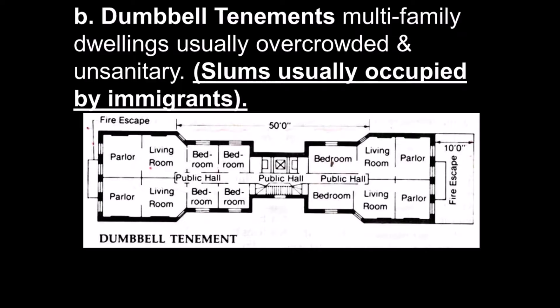A famous urban studies topic is the dumbbell tenement. A tenement is basically a boarding house where people can live — similar to migrant camps today. The layout shows a public hall down the middle leading to bedrooms, with common living areas and parlors. These spaces were very small — maybe a few hundred square feet total. Tenement houses would hold dozens of people, with one bedroom holding several people far beyond what you'd expect.